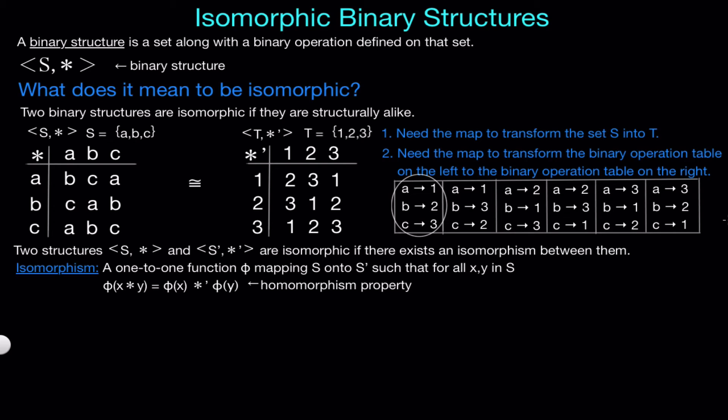Just like before, there are six one-to-one functions mapping S onto T. So we really just need to find the function that satisfies the homomorphism property. To visualize what the homomorphism property is doing, let's change the table on the left using an arbitrary function phi. Now from this we see that we need the one-to-one function phi mapping S onto T to be defined by phi of A equals 1, phi of B equals 2, and phi of C equals 3.